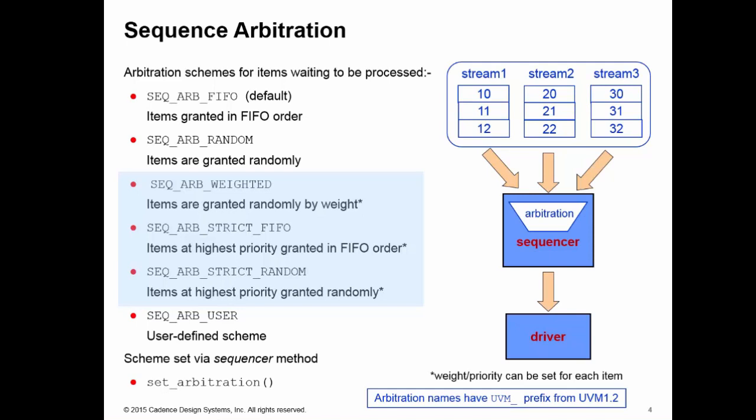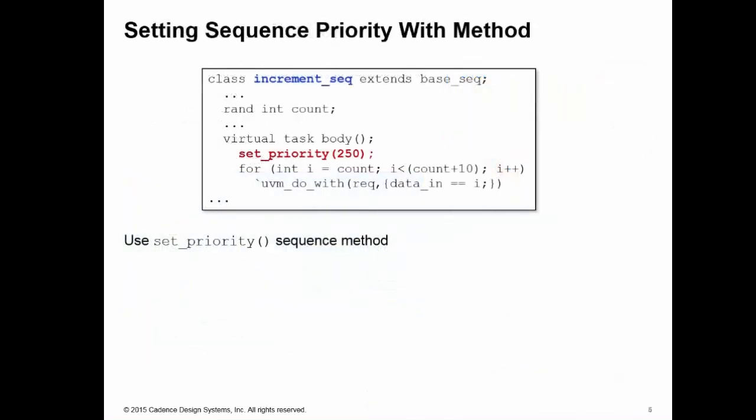In order to use these arbitration mechanisms, we need to set the priority or weight of individual data items and sequences. There are three ways of doing that. The first way uses a simple sequence method, set_priority.